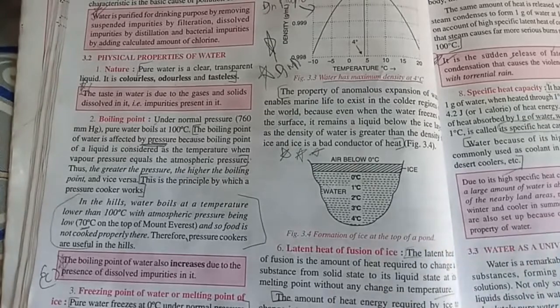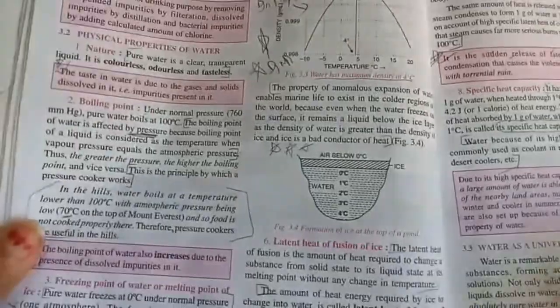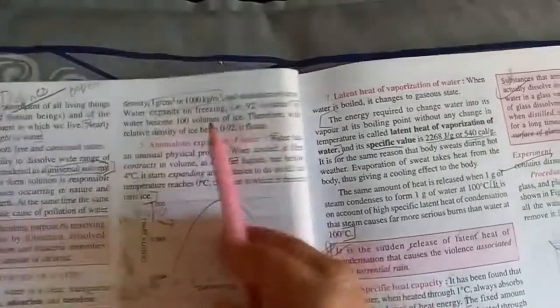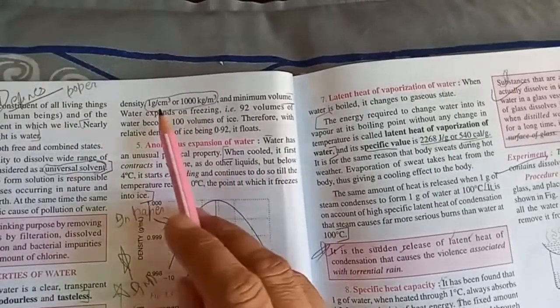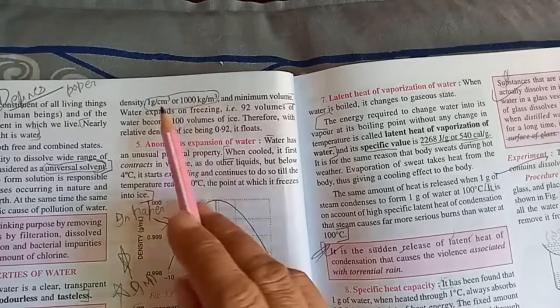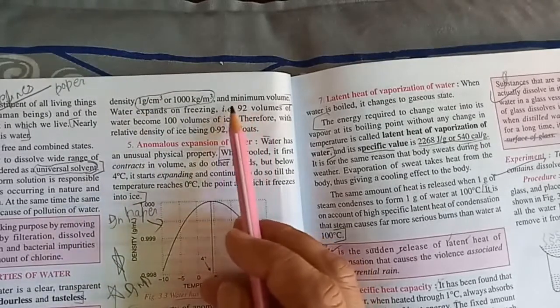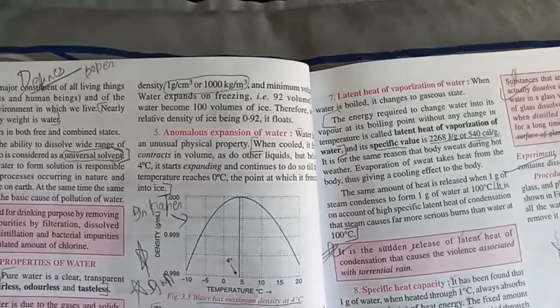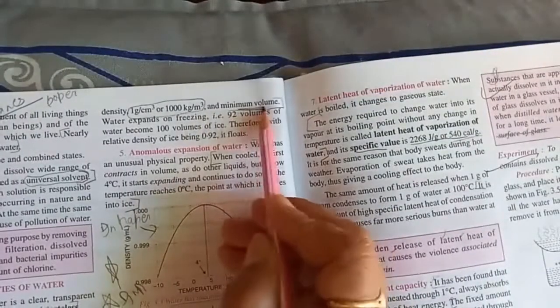The density of water is maximum at four degrees Celsius. This is 1000 kg per cubic meter or one gram per cubic centimeter. At this temperature, density is maximum but volume is minimum.